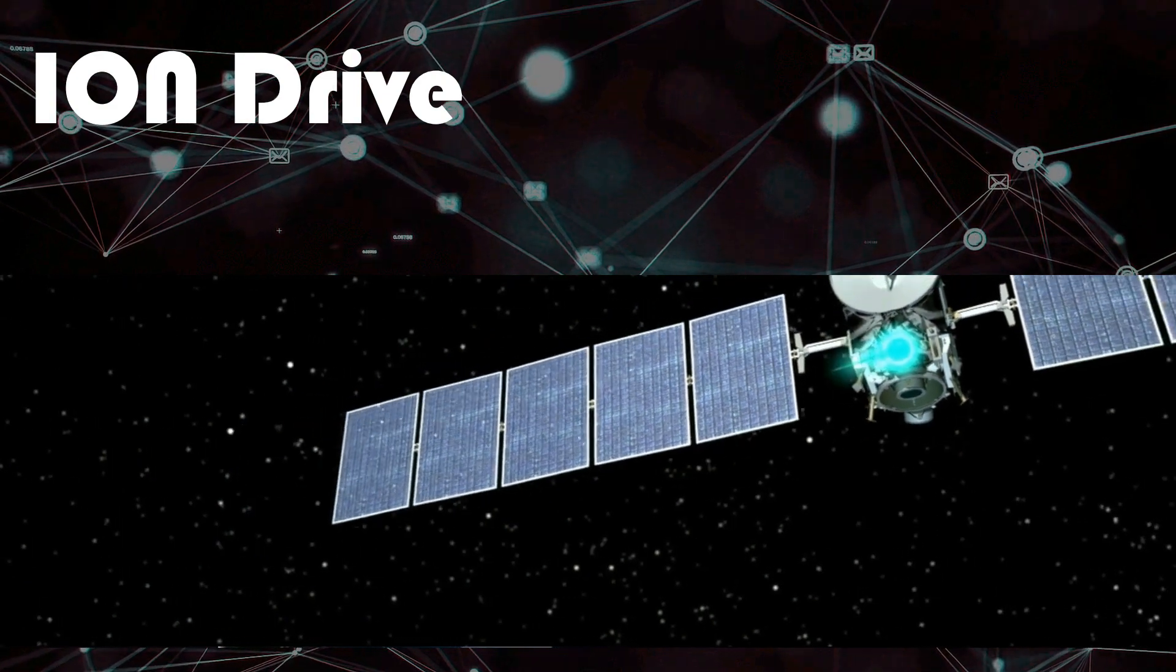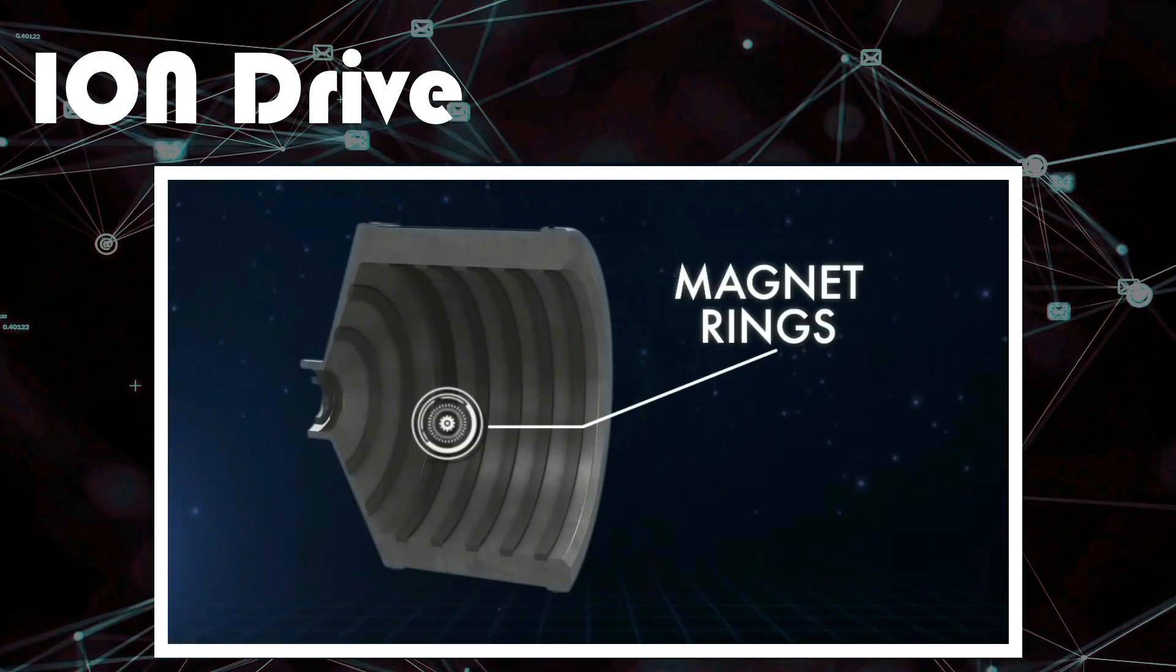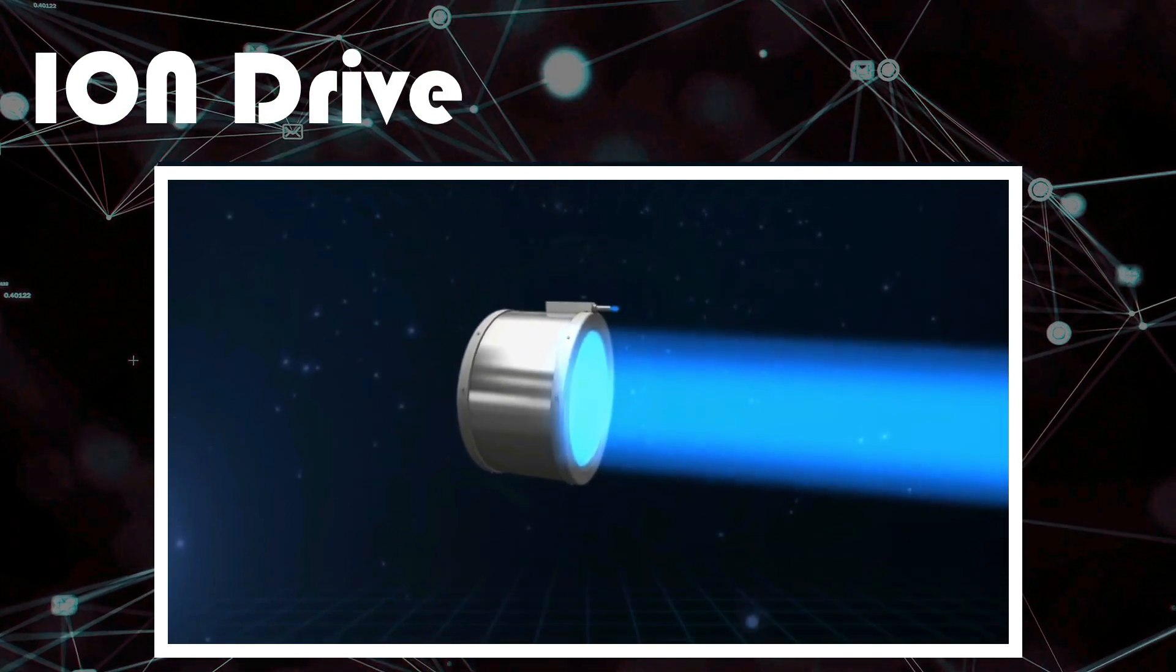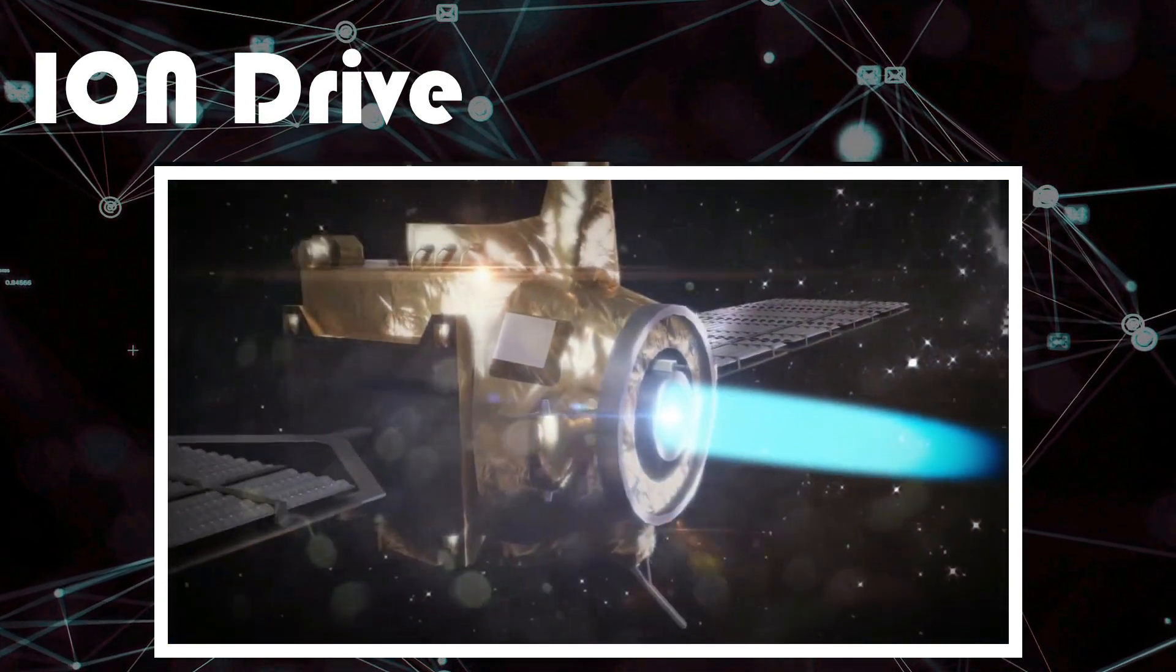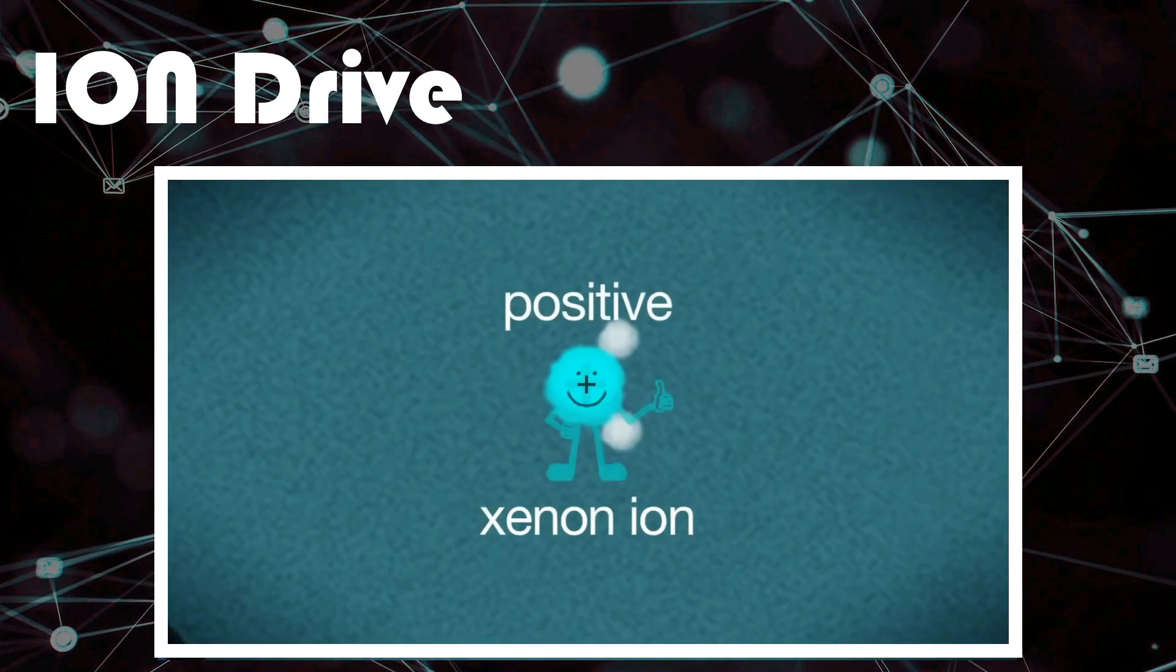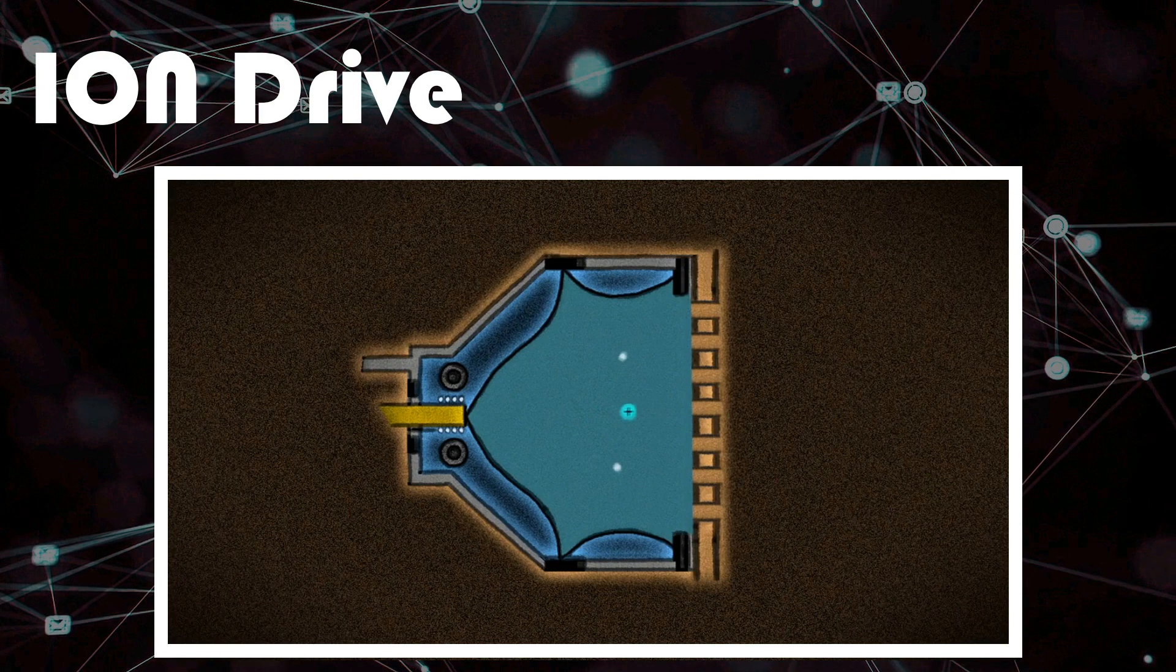Ion drive uses electromagnetic field to create thrust by accelerating ions using electricity. The thrusters create ions by generating plasma inside the spacecraft. Neutral gas like xenon is bombarded with electrons, which in turn creates more electrons.